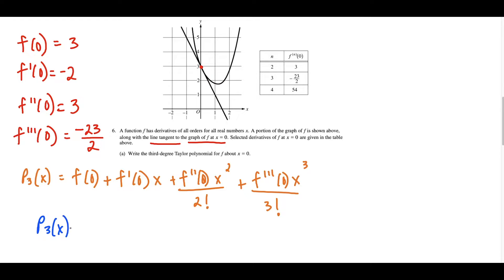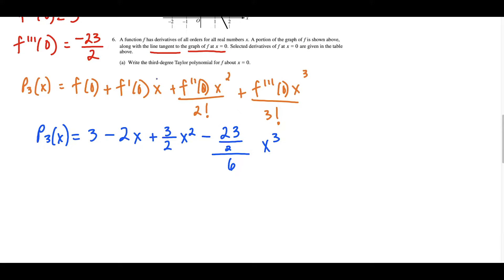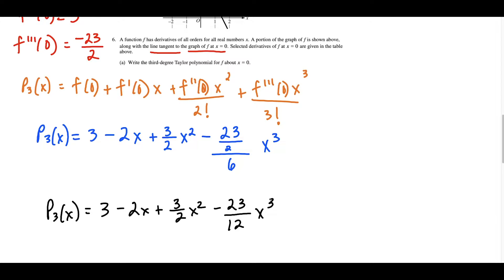The third degree Taylor polynomial equals 3 minus 2x plus 3 over 2 times x squared, because f double prime of 0 is 3 divided by 2 factorial. And for the last term, we have minus 23 over 2 divided by 3 factorial, which is 6, giving minus 23 over 12 times x to the third. So our final answer to part A is: p sub 3(x) = 3 − 2x + (3/2)x² − (23/12)x³.